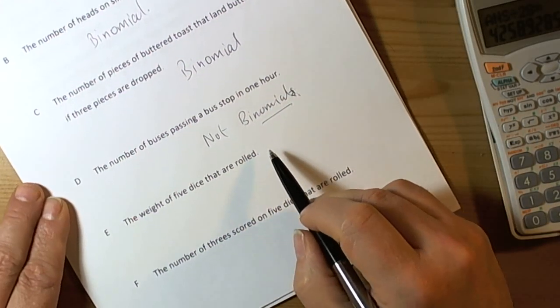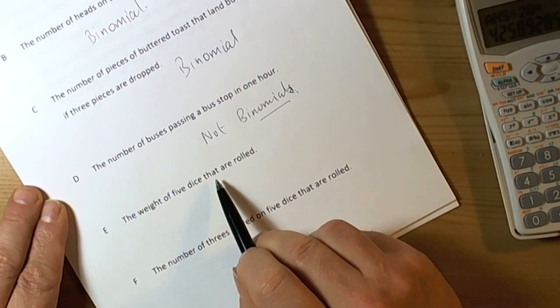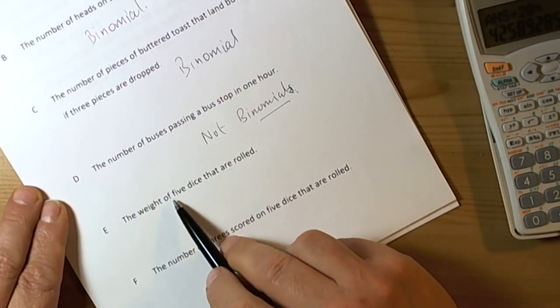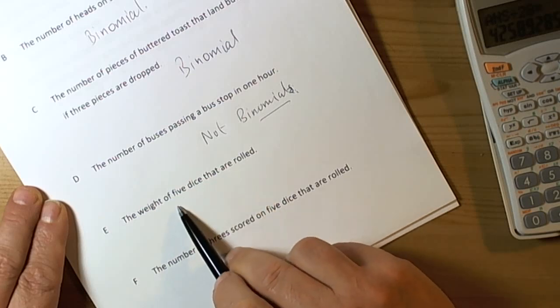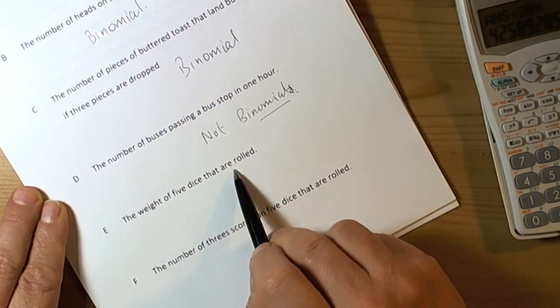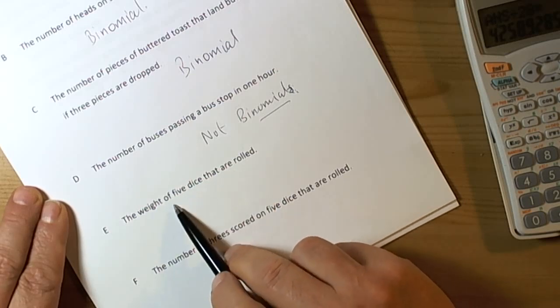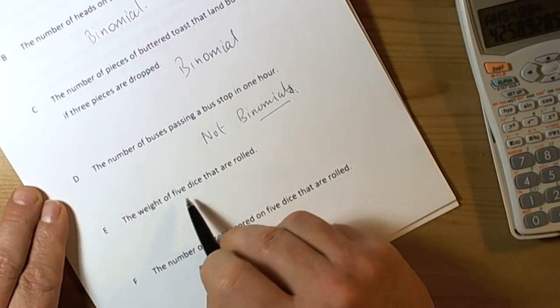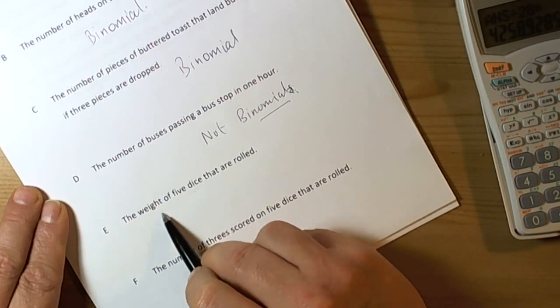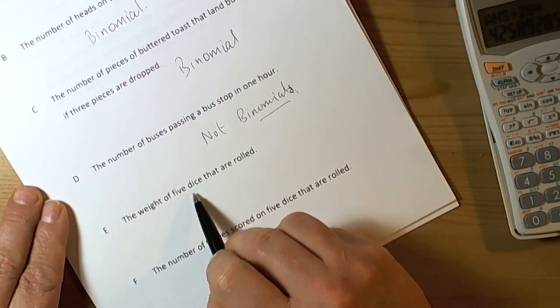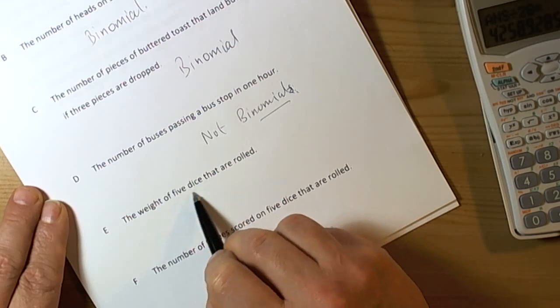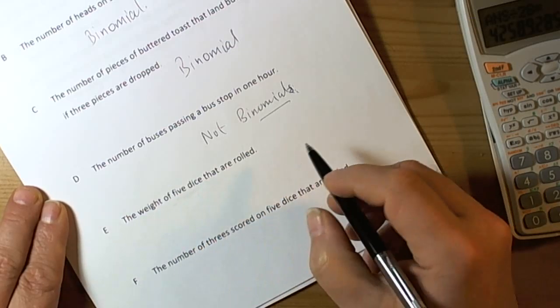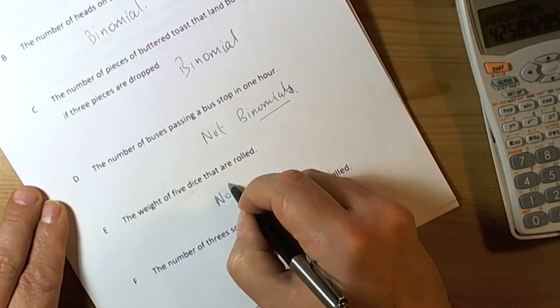The weight of five dice that are rolled. Is this fixed? Well no, it's continuous data. The weight of the dice could change, there could be anything. So it's not a fixed number for each dice. Although the number of events is fixed at five, the outcomes probabilities could change and it's not discrete data, it's continuous data. So that fails, it's not binomial.